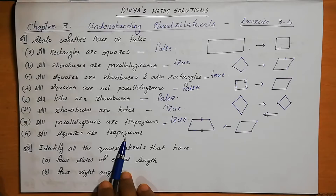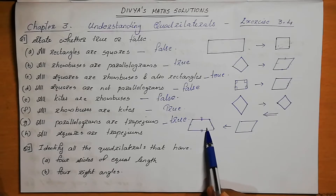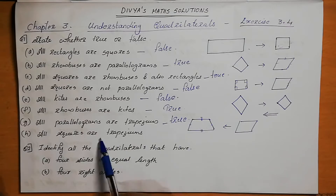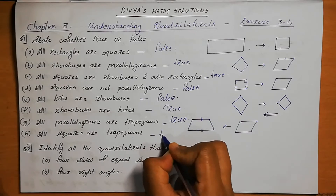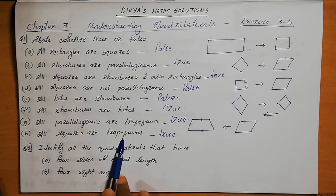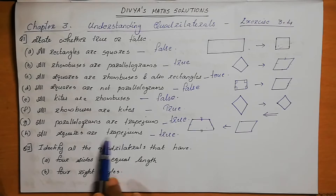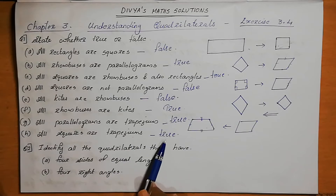All squares are trapezium. A square means all sides are equal, so that condition is also satisfied. All squares are trapezium is also a true statement. We compare the given property and if those properties are satisfied, we say that statement is true or false.